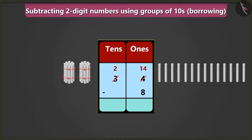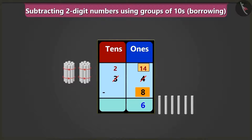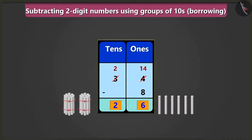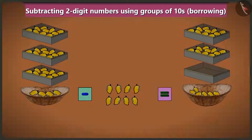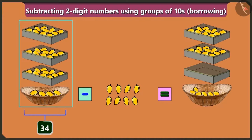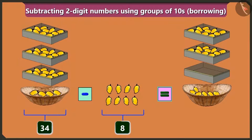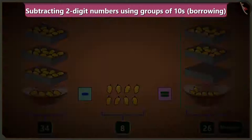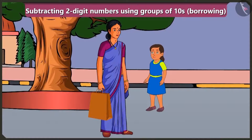Now if we subtract eight from fourteen in the place of ones, then one, two, three, four, five and six are left. So we will write six in the place of ones. Now we will have two tens in the place of tens, so we will have two tens only. The answer will be twenty-six. So this way, thirty-four minus eight equals twenty-six mangoes. You are absolutely right, Bubbly.